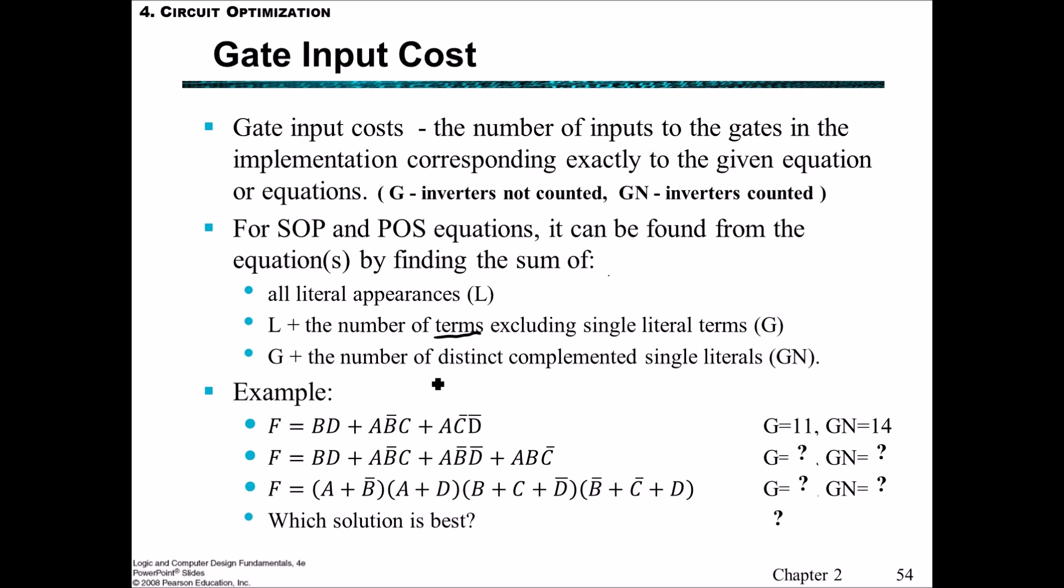So for this example, let's do this first one. We count first the literals, which gives eight, so that would be L equal to eight. To get G, we also count the terms that are not single. So there's one term, another term, another term. So this is eight plus three giving eleven. And then for GN, we have the value of G being eleven plus all the single complemented literals. So this is one of them and these are two more. So the total GN is fourteen, eleven plus three.